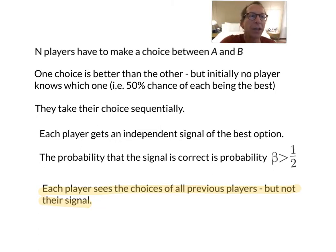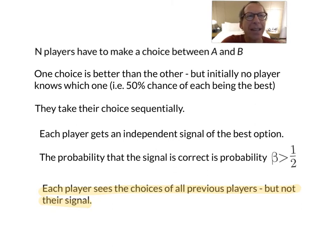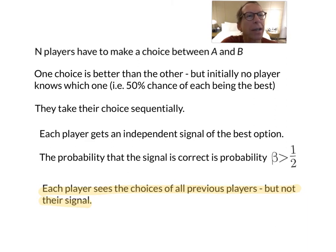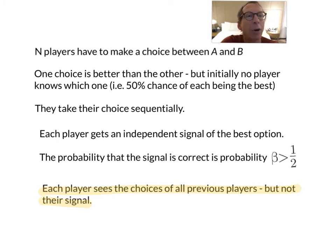A simple example: you go to a new town where there are two restaurants, A and B. You've looked it up online and the internet says restaurant B is the better restaurant. You head towards the restaurants — they're next door to each other — you look in B and it's empty. You look in restaurant A and there are 10 people in restaurant A. Which restaurant do you go into? Your private information says restaurant B is better, but everybody else is in restaurant A. That's the decision you face as player number 11.